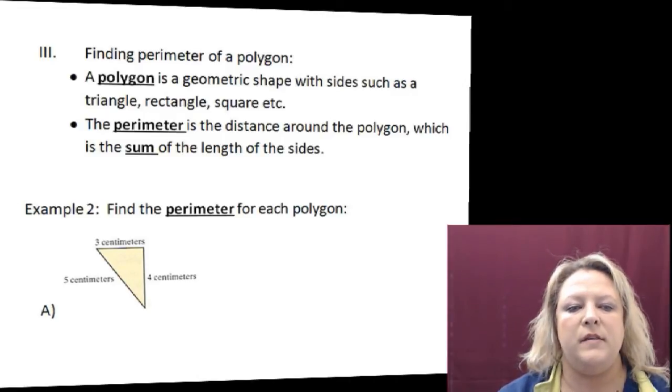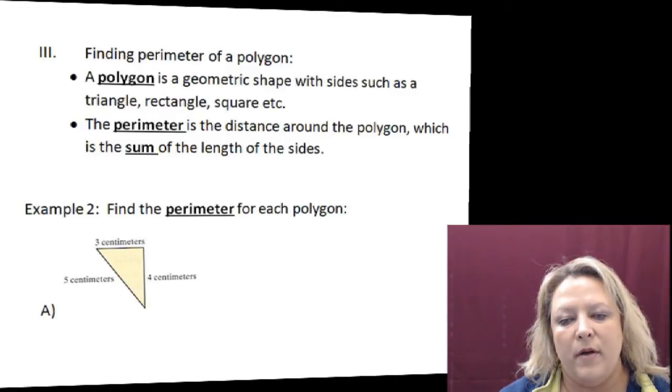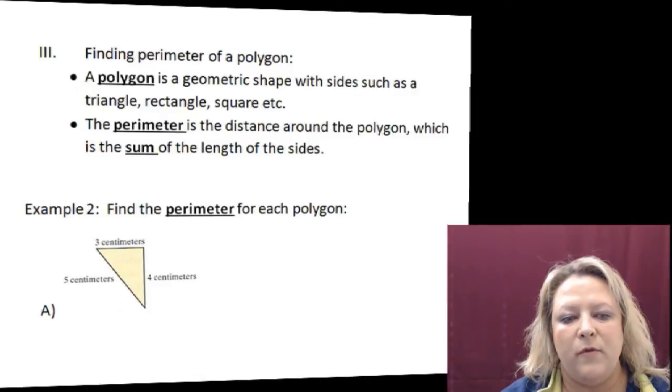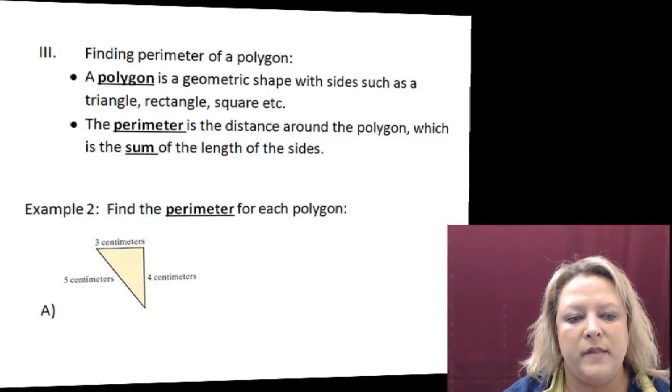In the first example that you see, we're finding the perimeter of a triangle and that means you have three different sides, 3, 4, and 5, and all you have to do is add those together to get 3 plus 5 makes 8, and then 8 plus 4 makes 12, so the perimeter of that triangle would be 12 centimeters.